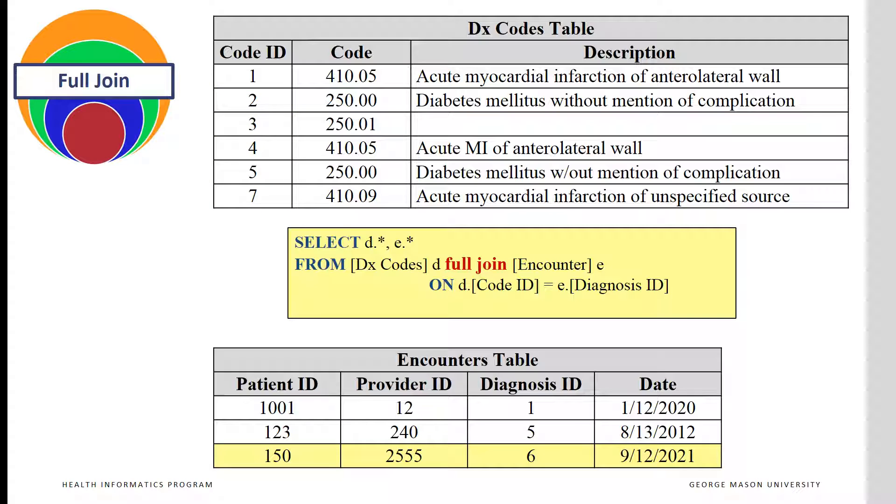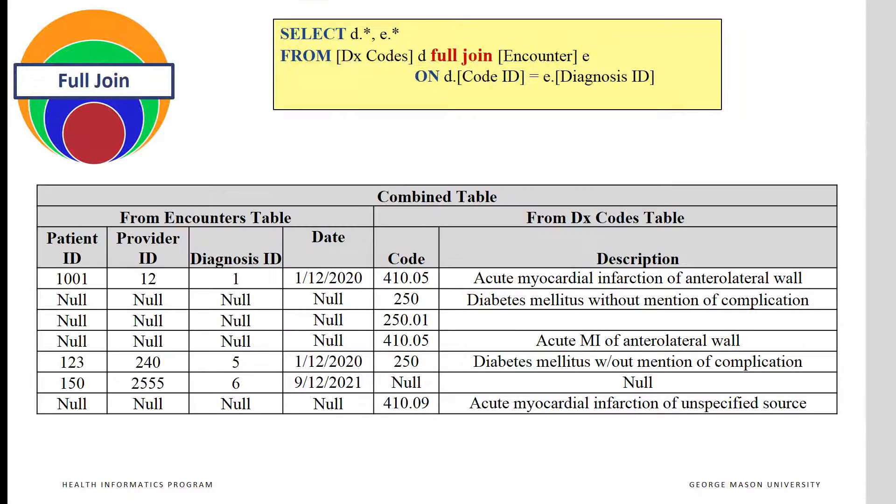For diagnosis ID 6, the encounter information is listed, but the description is now left null. Now the combined table includes null values in both descriptions and encounters.